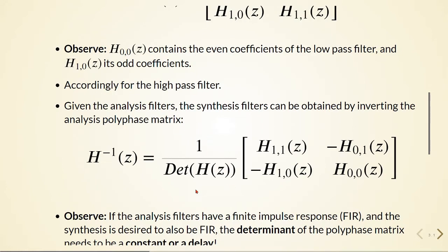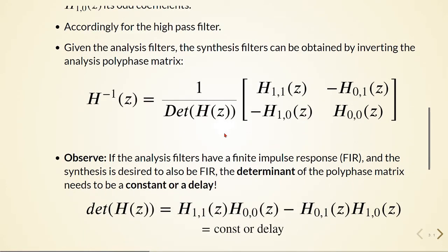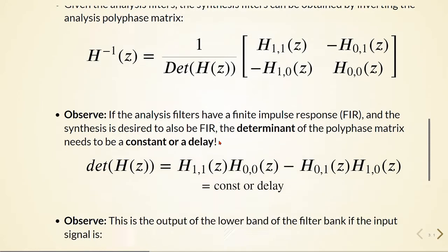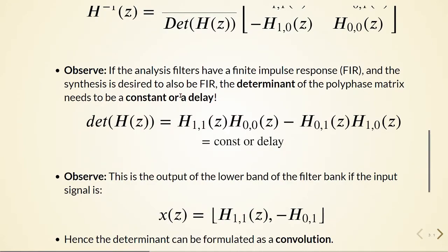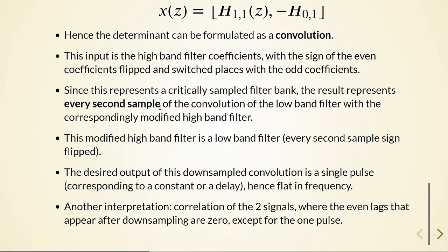We have this determinant, then we need to have a constraint for this determinant, that this determinant needs to be a constant or a delay and we have certain cases where it happens.